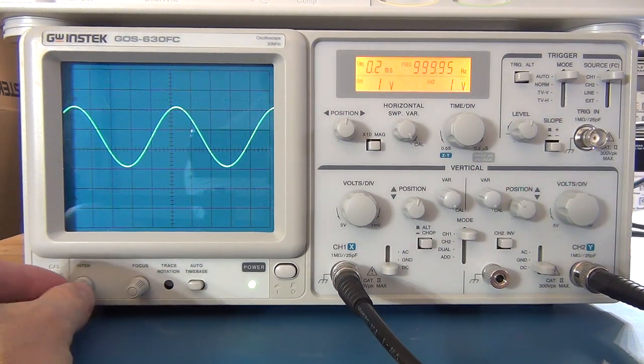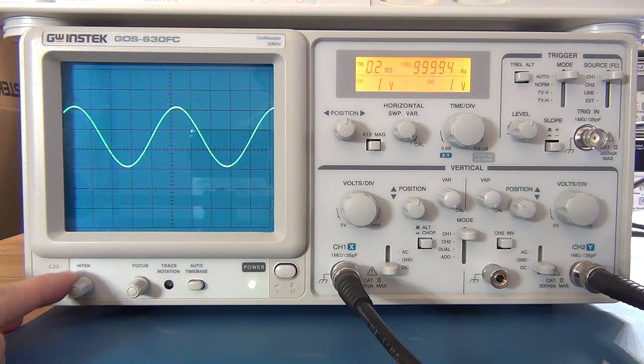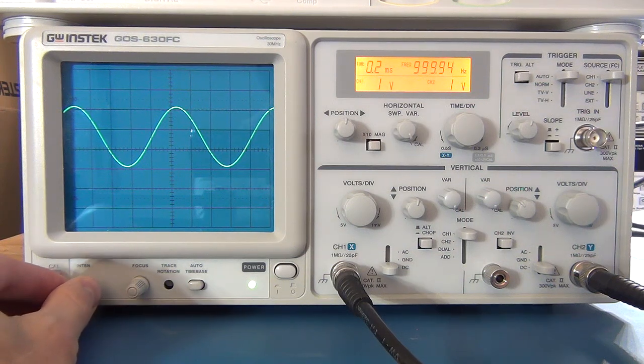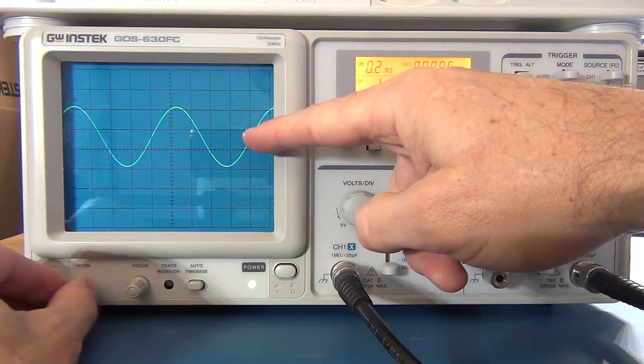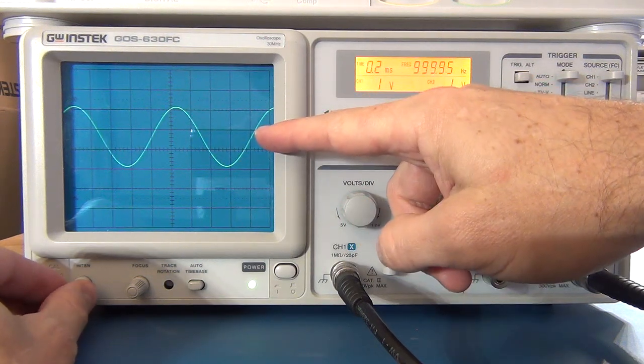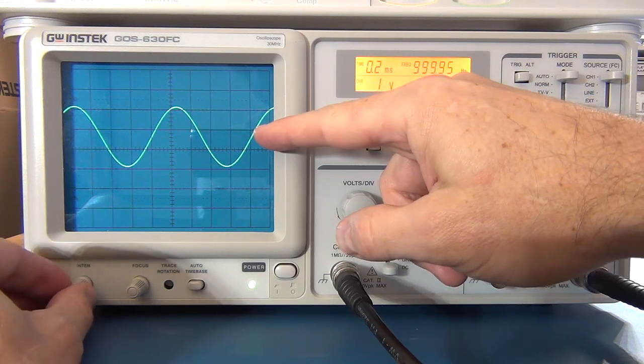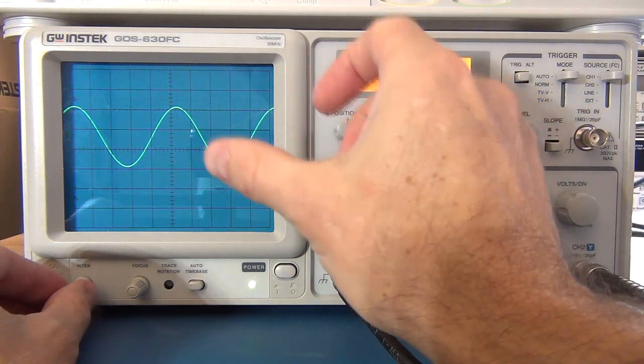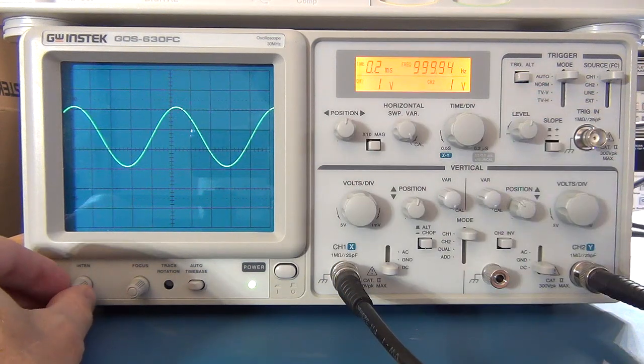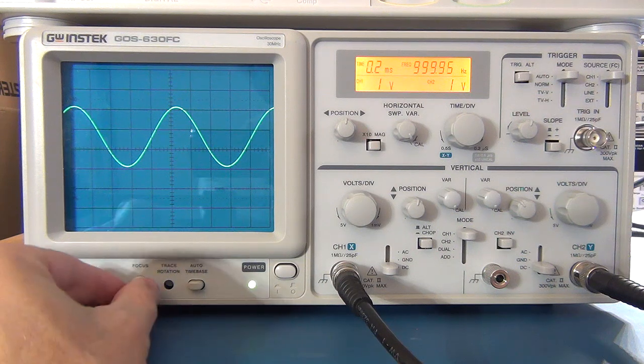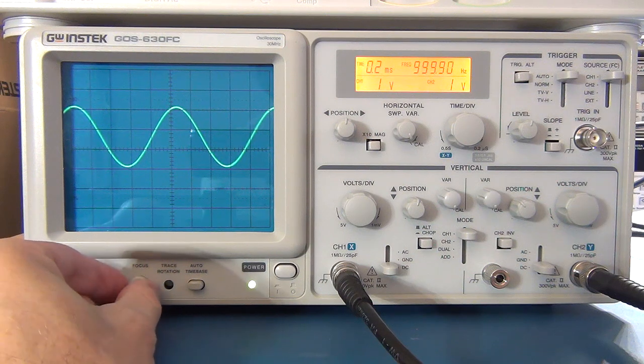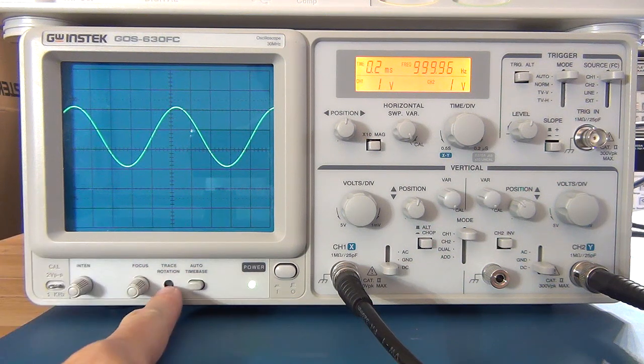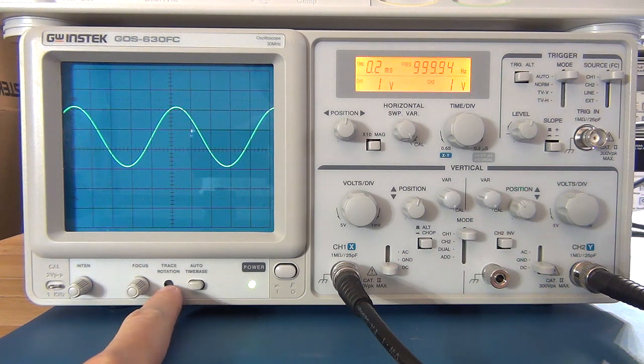Some different controls on an analog scope - you've got something down here called intensity. You can change the intensity of the trace across the CRT. That may be helpful when you're looking for little glitches or noise, you want to change the intensity. Or if you've got the trace running at a different speed, you might want to turn up the intensity so you can see the wave a little better. It has a focus knob as well. If I turn that, you can see the wave goes out of focus so you can set the focus correctly.